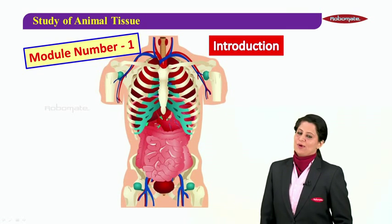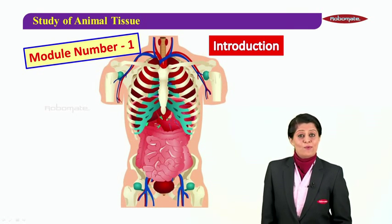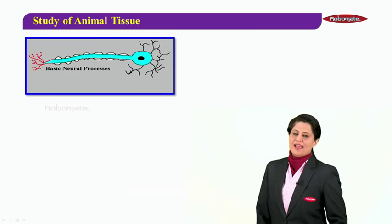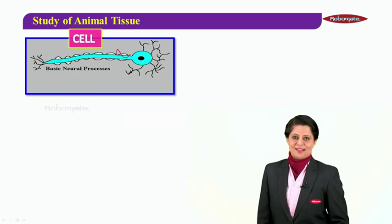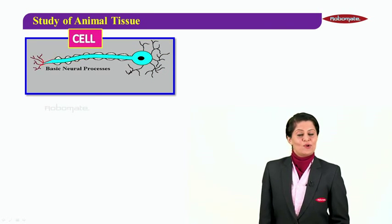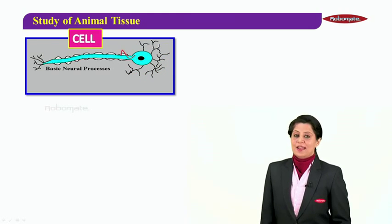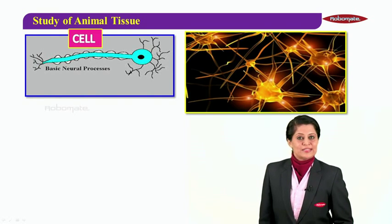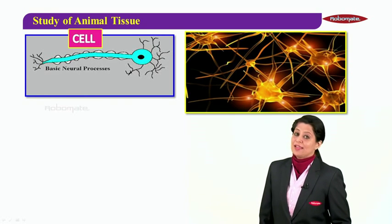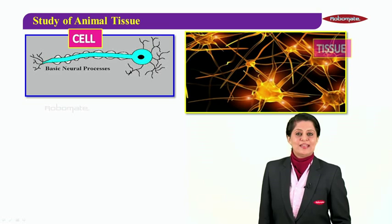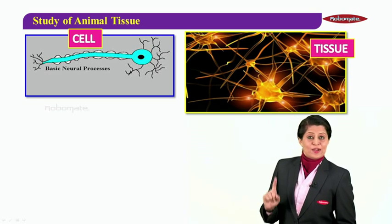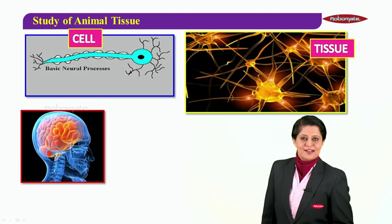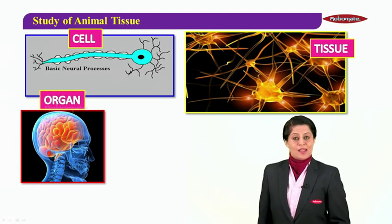Watch this picture — it's showing a cell, a single cell which is actually a neuron of your body. Now, when groups of such cells join together, we call it a tissue.